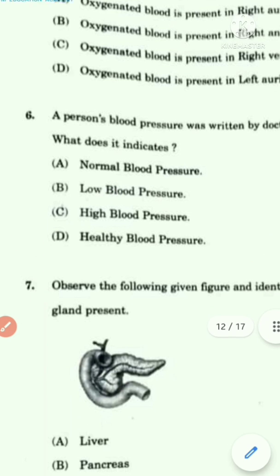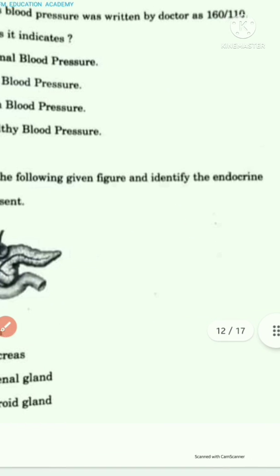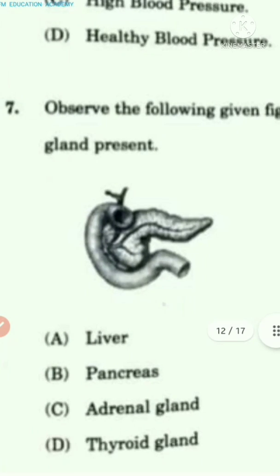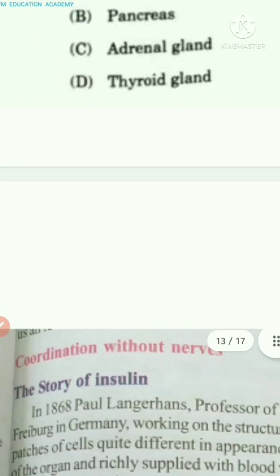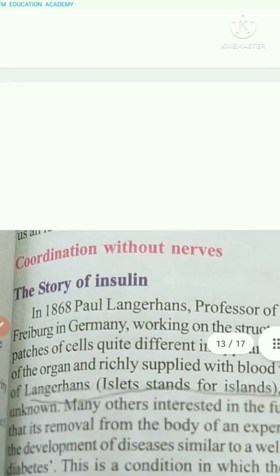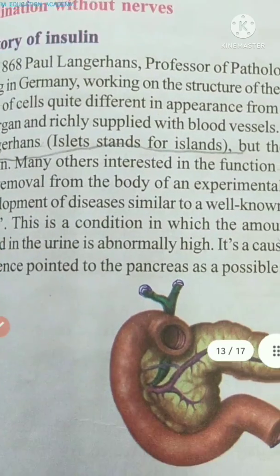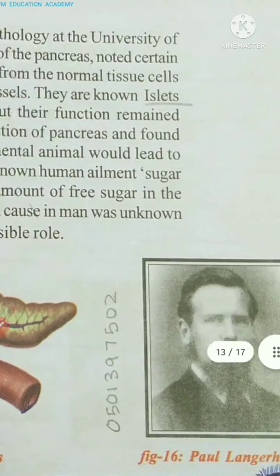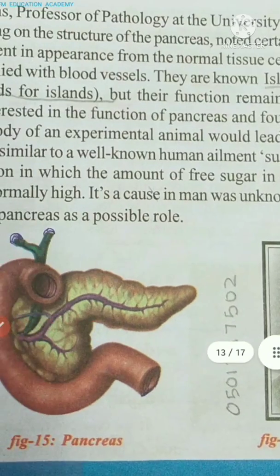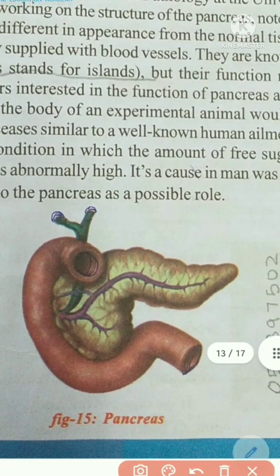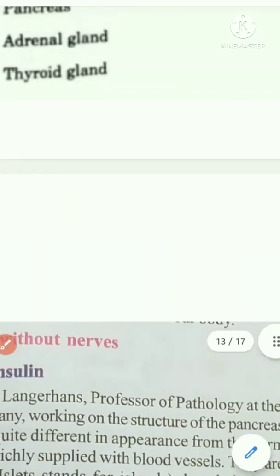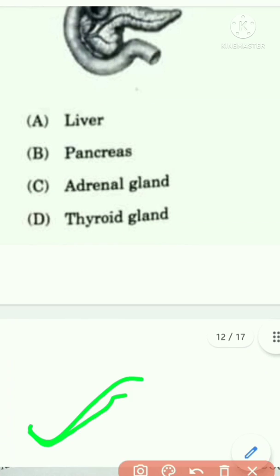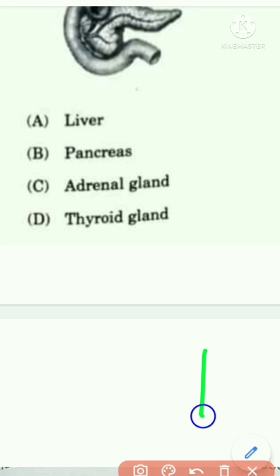The seventh question asks to observe the following figure and identify the endocrine gland present. This figure is from your textbook, from the coordination chapter — the story of insulin — on page 105. The figure shown is of the pancreas. So the answer is Option B: pancreas.